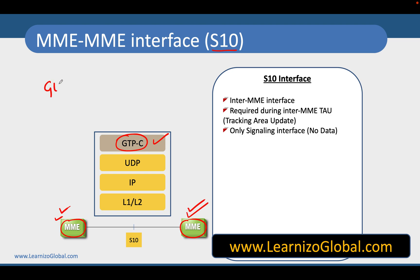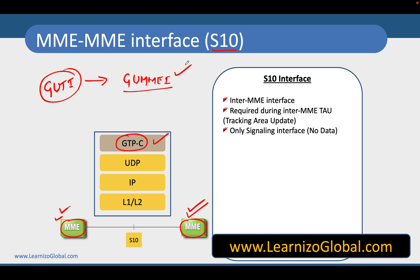That is typically taken care of by the GUTI — the Globally Unique Temporary Identifier. This GUTI also contains information called the Globally Unique MME ID (GUMMEI), so the GUTI includes information about the MME as well. This allows MMEs to locate each other and communicate using GTP-C in both idle mode and dedicated mode mobility.